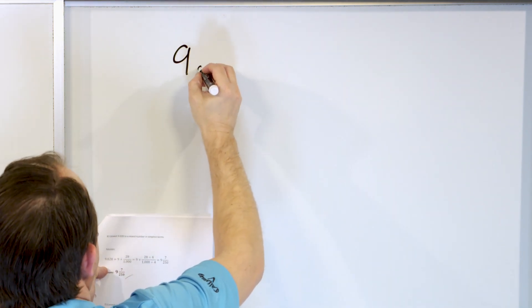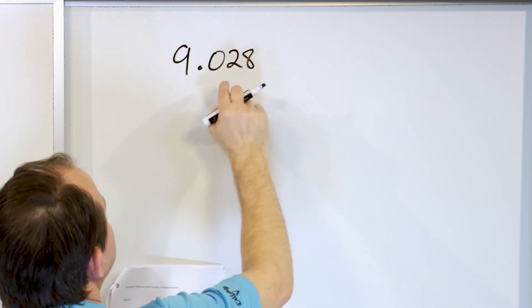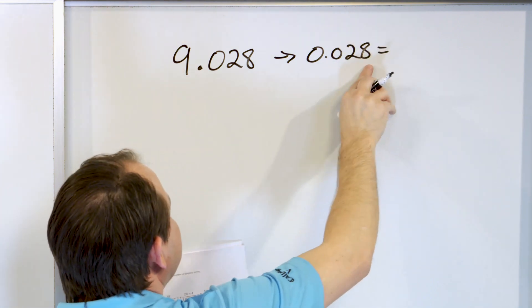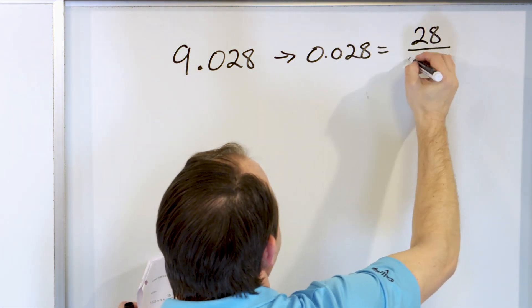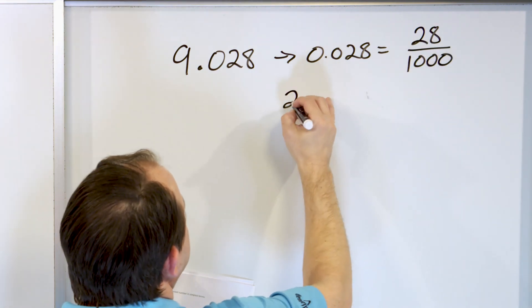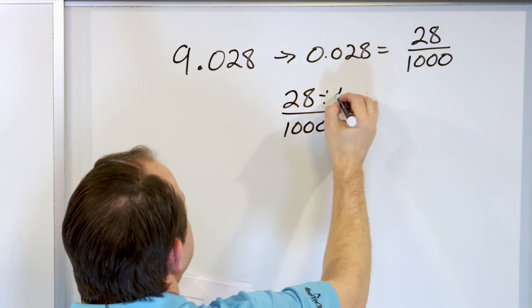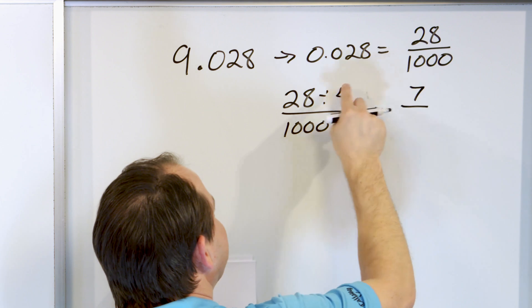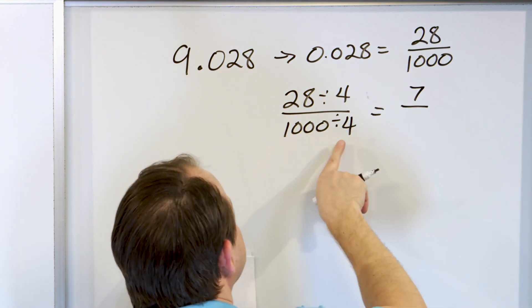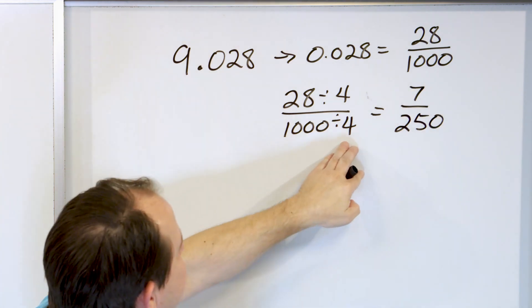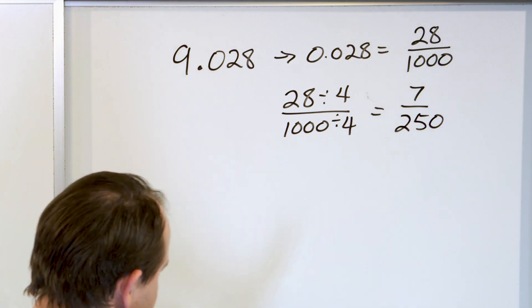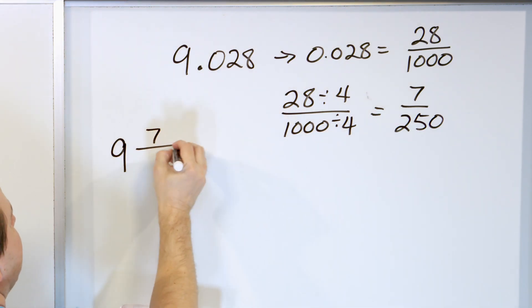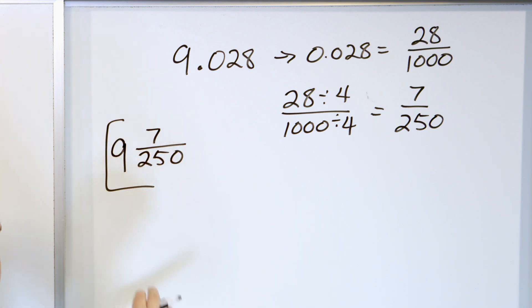That is the halfway mark of the lesson. Here's problem number 6: 9.028. Let's focus on the fractional part, 0.028. It's 28 in the farthest position, which is thousandths. We divide top and bottom by 4 — we could divide by 2 but then we'd have to do it again. 28 divided by 4 is 7, and 1,000 divided by 4 is 250. So we attach this to the 9 to get 9 and 7 two-hundred-fiftieths. That's the final answer.